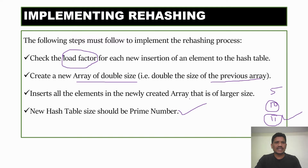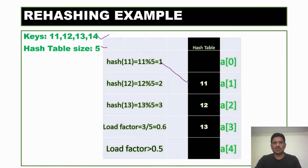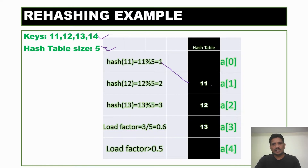Let's go to an example to see how we implement the rehashing concept. The elements given are 11, 12, 13, 14, and the hash table size is 5. We can insert all elements into the hash table using any open addressing method — linear probing, quadratic probing, or double hashing. 11 modulus 5 gives remainder 1, so 11 is placed at index 1. The load factor is 1/5 = 0.2, which is below 0.5, so we don't go for rehashing. Inserting 12: 12 modulus 5 gives remainder 2, so 12 is placed at index 2. The load factor is 2/5 = 0.4, which is still below 0.5, so we don't go for rehashing.